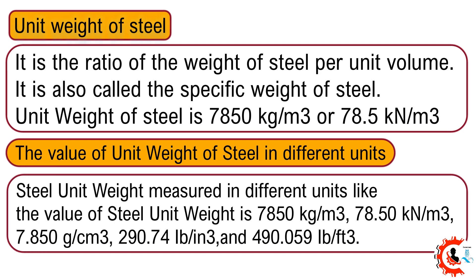The value of unit weight of steel in different units. Steel unit weight measured in different units: 7850 kilograms per cubic meter, 78.50 kilonewtons per cubic meter, 7.850 grams per cubic centimeter, 290.74 pounds per cubic inch, and 490.059 pounds per cubic foot.